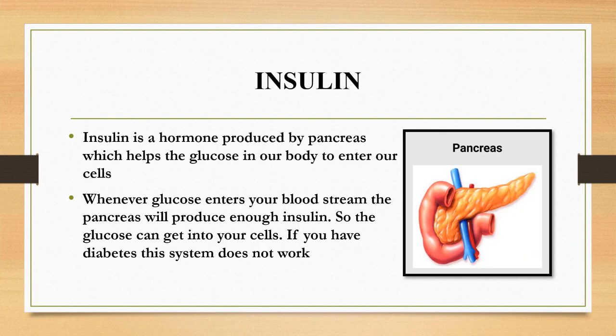Insulin is a hormone produced by the pancreas. In the picture you can see the pancreas, which helps the glucose in our body to enter into our cells. So whenever glucose enters your bloodstream, the pancreas will produce enough insulin so the glucose can get into your cells. If you have diabetes, this system doesn't work.